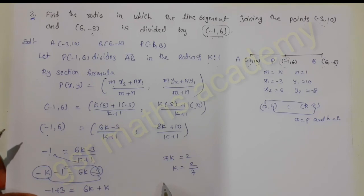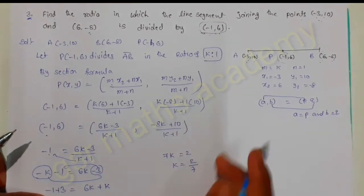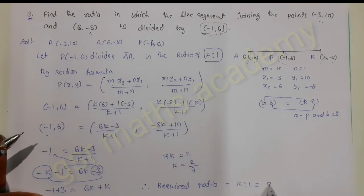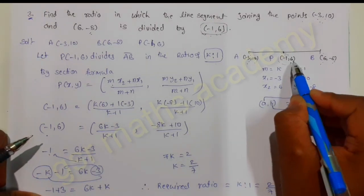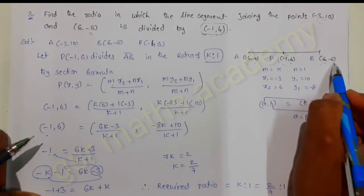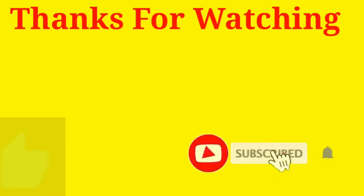We got k equal to 2 by 7. We supposed the ratio as k is to 1, so the required ratio is k is to 1, which equals 2 by 7 is to 1, which can be written as 2 is to 7. Therefore, point P minus 1 comma 6 divides the line segment joining A minus 3 comma 10 and B 6 comma minus 8 in the ratio 2 is to 7. Thanks for watching, please subscribe and like and share.